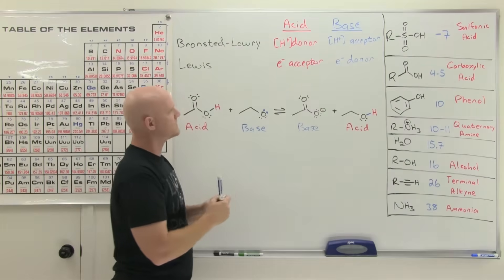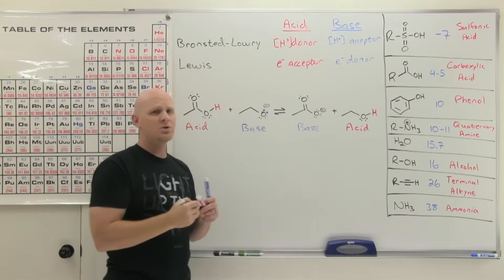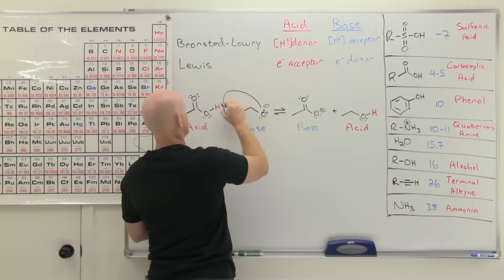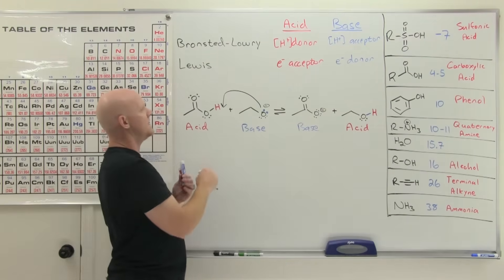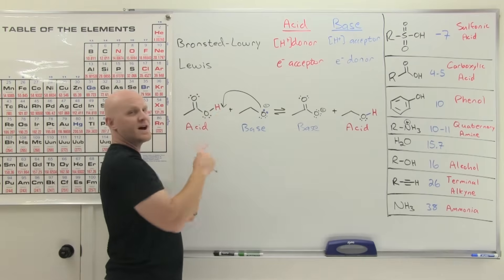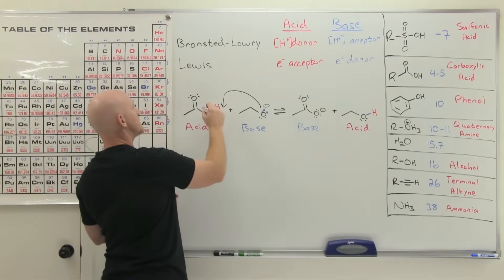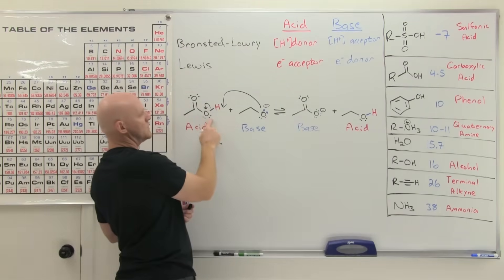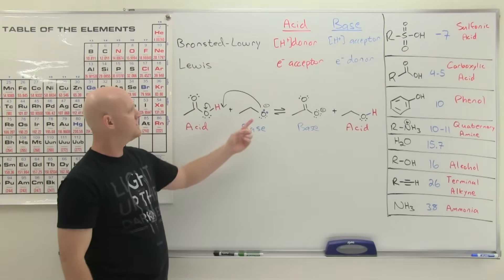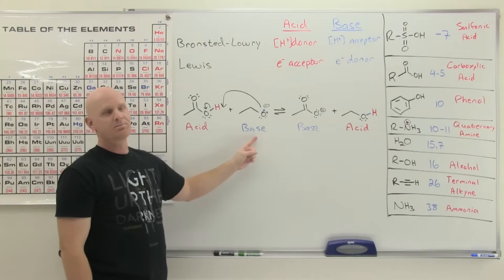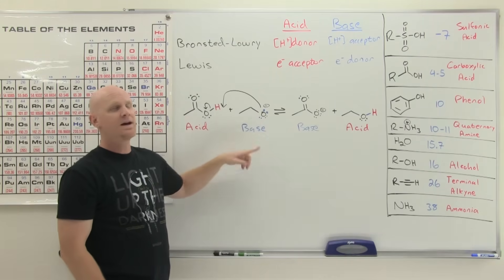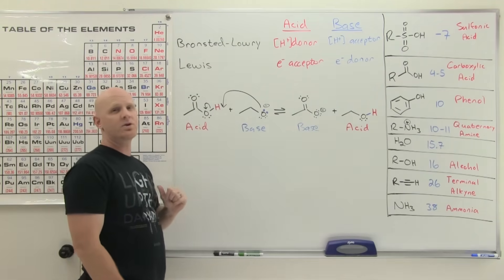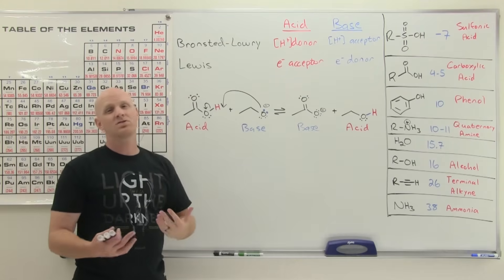Lewis would say: follow the electrons used to create the new bond. We often draw arrows to show where bonds are being broken and formed. While we make a bond to hydrogen, hydrogen can only have one bond, so the old one is broken and those two electrons end up on the other oxygen — which is why it ends up with three lone pairs even though it started with two. Lewis would call the electron pair donor the base, and the molecule whose atom accepted that bond the electron pair acceptor — the acid.